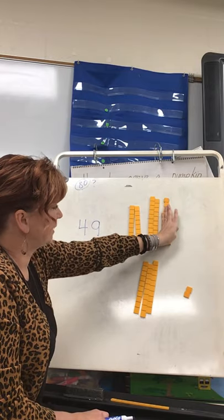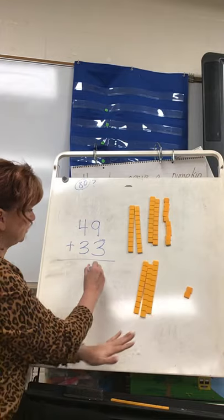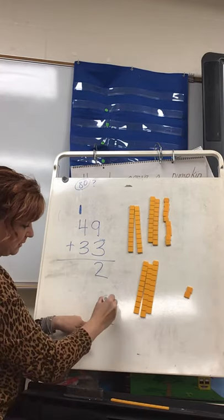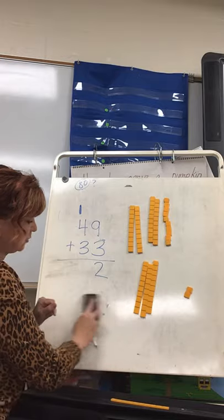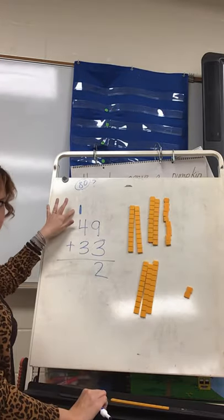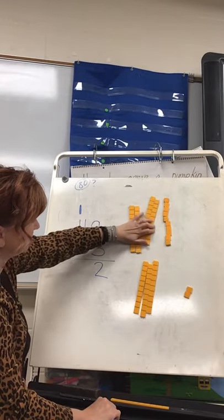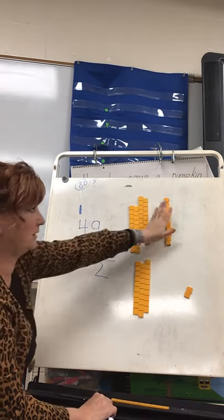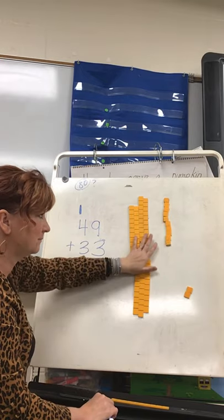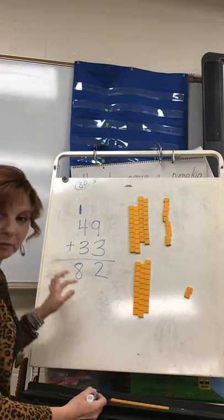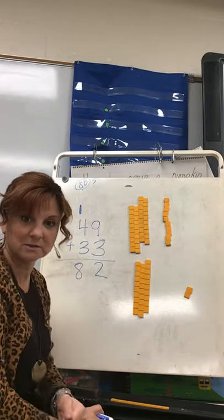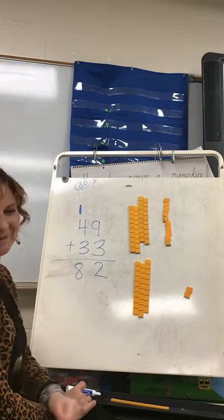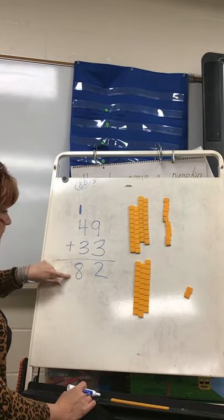Nine plus three was 12, so two stays down at the bottom in the ones column and we make one new ten up here. Then we add four tens plus three tens plus one more ten: 4 and 3 is 7, and one more is 8. The answer is 82. I said it would be close to 80 — 82 is pretty close, and we are correct. 49 plus 33 is 82.